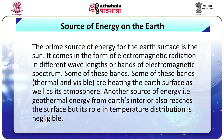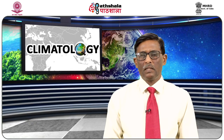Coming to the source of energy on the earth: the prime source of energy for the earth's surface is the sun. It comes in the form of electromagnetic radiation in different wavelengths or bands of the electromagnetic spectrum. Some of these bands, thermal and visible, are heating the earth's surface as well as its atmosphere. Another source of energy is geothermal energy from the earth's interior, but its role in temperature distribution is negligible. Therefore, we will discuss the distribution of temperature received only from the sun.